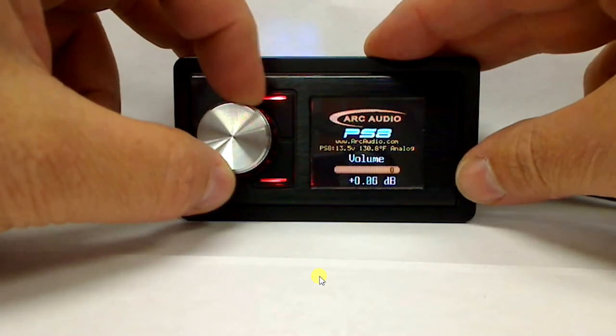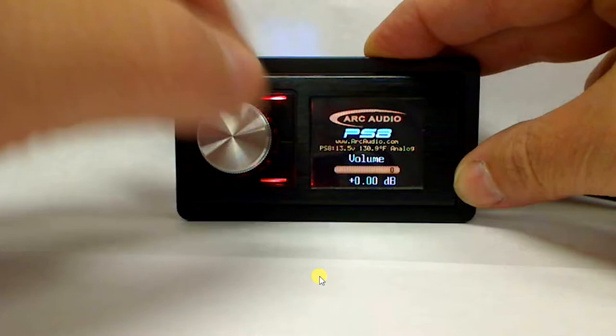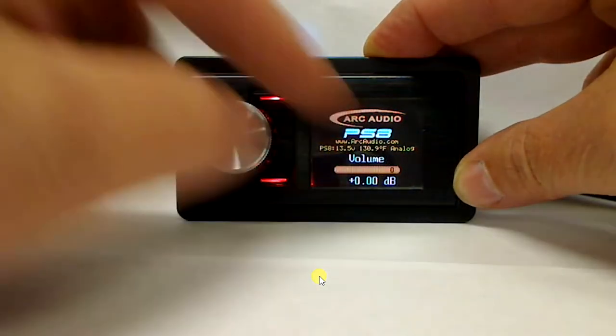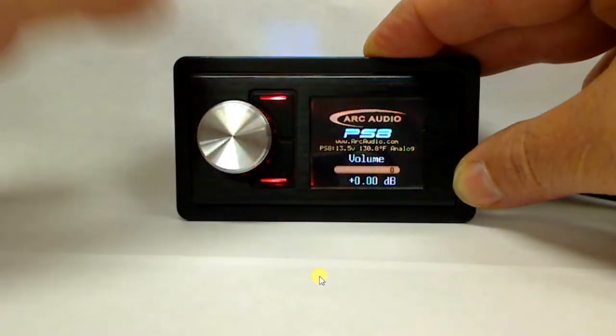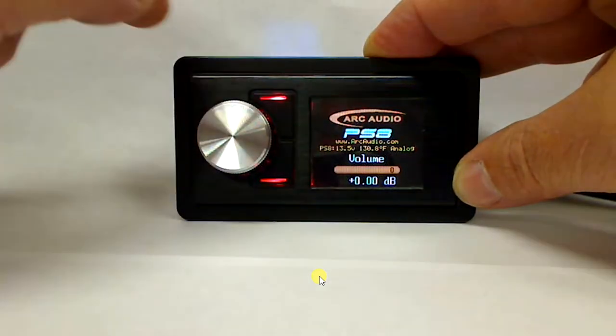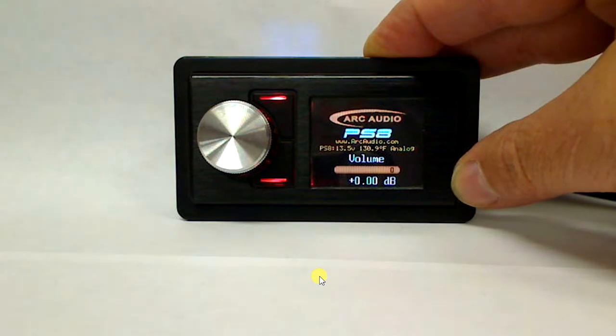First thing we're going to do is toggle the volume knob here so we go back to the home screen. You can see that from the home screen at all times you have your volume, what type of input (as you see here there's analog, if you're doing digital it'll actually show you the sample rate of the signal that you're receiving), as well as your temperature in Fahrenheit and Celsius, and the voltage of your system. This is a great tool to have especially if you're doing some of those late night listening sessions in your car, sitting in a parking lot or something like that. You want to make sure you don't kill your battery.